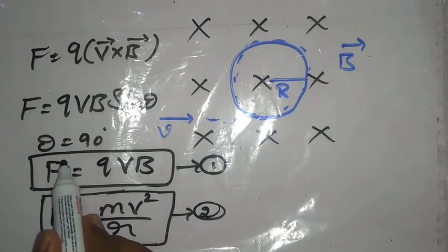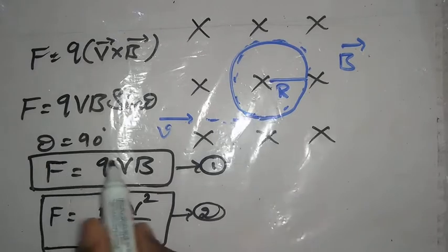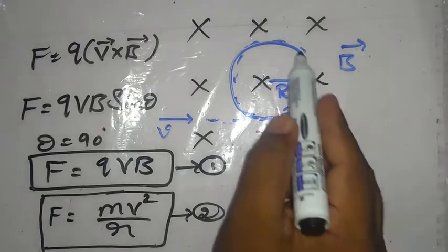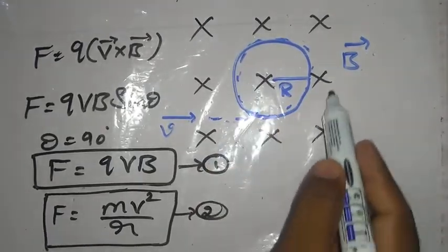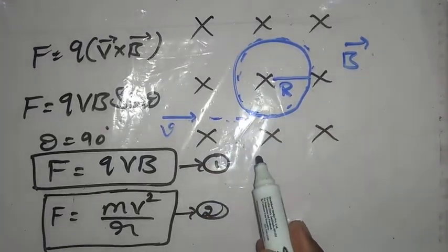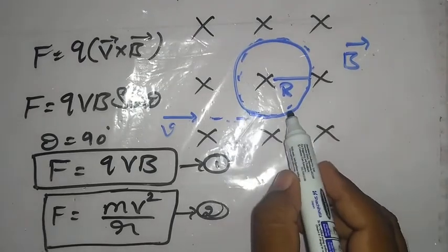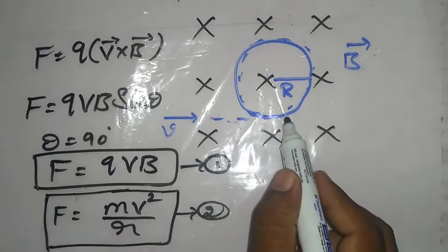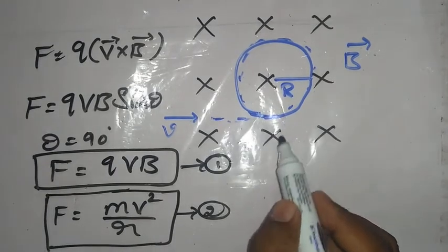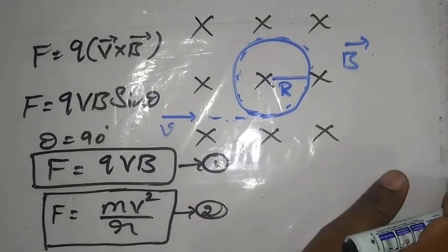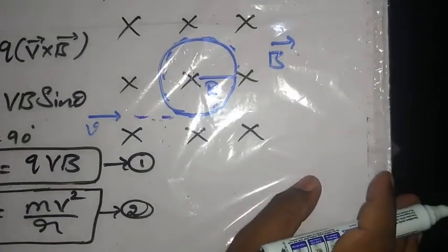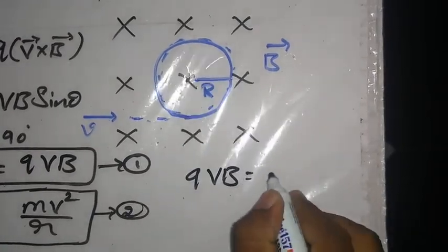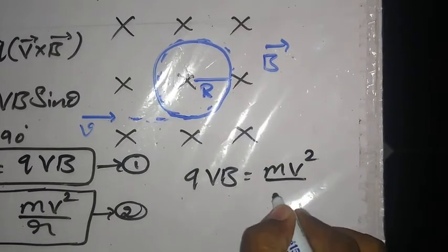This magnetic force acting on the charged particle provides the necessary centripetal force for the motion of the charged particle in the circular path. We can equate Equations 1 and 2: QVB = MV²/R.